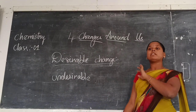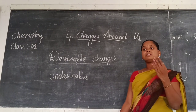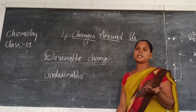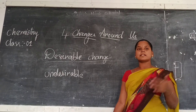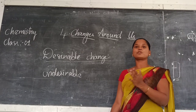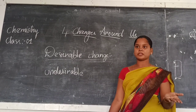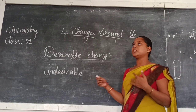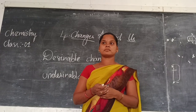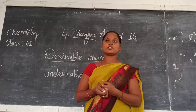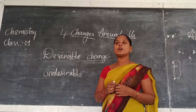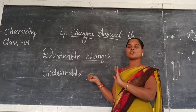Undesirable change means whichever is not useful for man. We require some changes, we don't require some changes. For example, the corona pandemic is an undesirable change — it is not required for us, but nature is giving it to us. Another example: if we cook food today it will be tasty, but tomorrow the same food spoils and we get a bad smell — we cannot eat it. That is not useful for man, so that type of change is called an undesirable change.